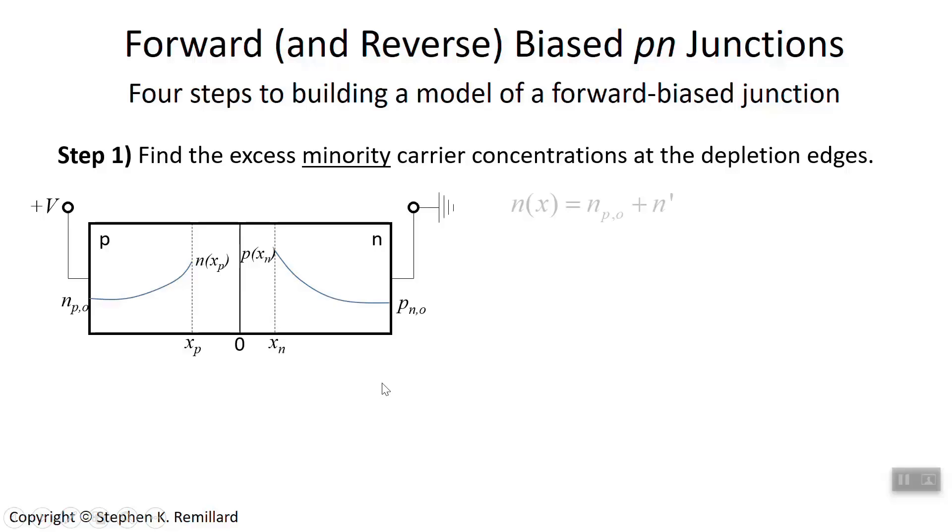So let's write that down as an expression. The electron concentration is its equilibrium value plus the excess carrier concentration. And we're talking about the electrons as minority carriers on the P-side, and we can do the exact same on the N-side for the hole carriers.